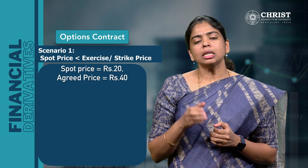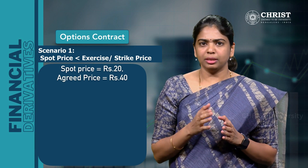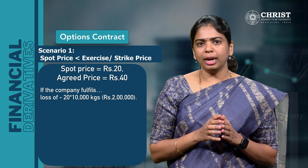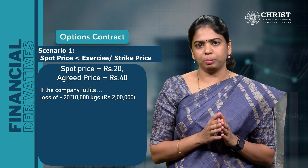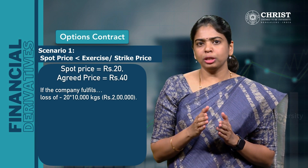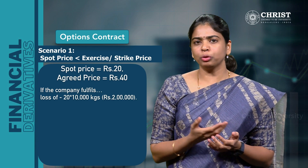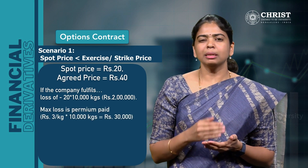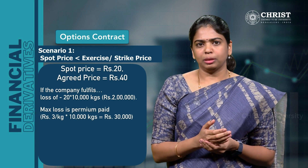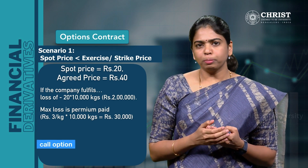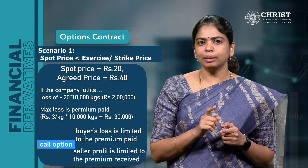In this case, the spot price on the date of expiry is much lower than the strike price. If the company fulfills the contract, it will incur a loss of ₹20 per kg into 10,000 kg — a total loss of ₹2 lakhs. But since it has bought a call option and the situation is not favoring the buyer, as per the contract the company is not obliged to fulfill it. So the maximum loss is the premium paid: ₹3 per kg into 10,000 kg = ₹30,000. Therefore, the call option buyer's loss is limited to the premium paid, and the profit for the seller of the call option is limited to the premium received.